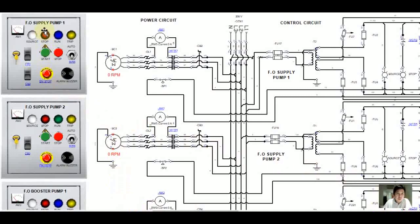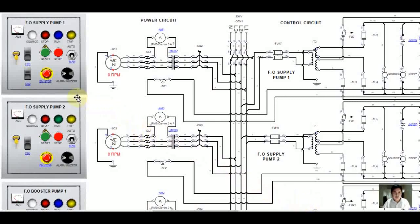We have fuel oil supply pump one and fuel oil supply pump two, and this is how you create a diagram. We have an electrical diagram — we have a power circuit and we have a control circuit. I created this diagram, and we also have a panel board for the fuel oil supply pump number one.